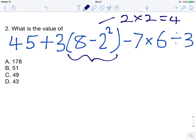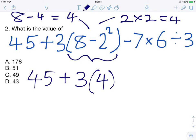When we write this with the bracket part solved, we have 4, because this is the same as 8 minus 4, which is equal to 4. Let's rewrite this. We have 45 plus 3, then in brackets 4, minus 7 times 6 divided by 3.